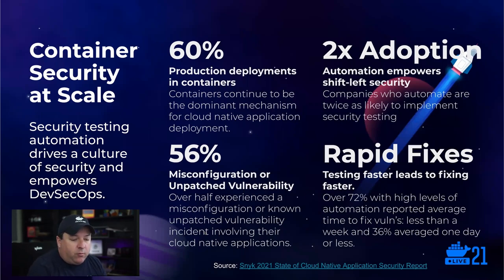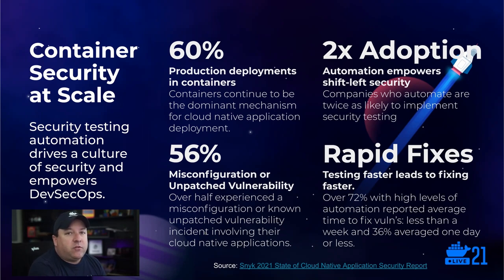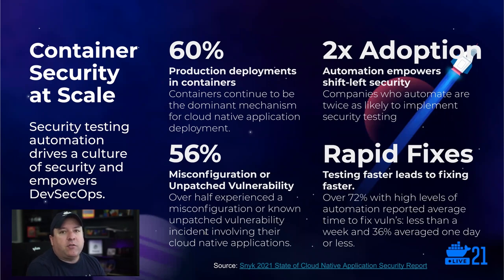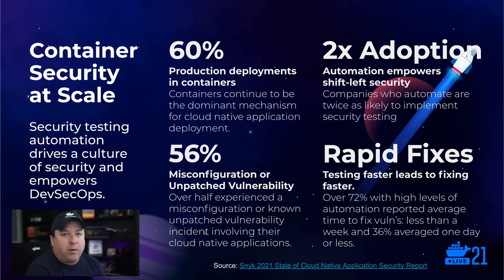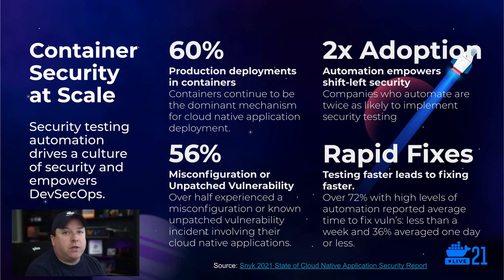Here at Snyk, we recently released our 2021 State of Cloud Native Application Security report. It's based on surveys of hundreds of companies deploying cloud native applications. Key findings: 60% of people surveyed are deploying production in containers, which pops up to 78% if you include serverless deployments. Over half of them have experienced incidents related to misconfigurations or unpatched vulnerabilities. Companies that automate their pipelines are twice as likely to implement security testing, and almost three quarters of those with high automation say security-related fixes can be deployed in less than a week — a third said less than a day.